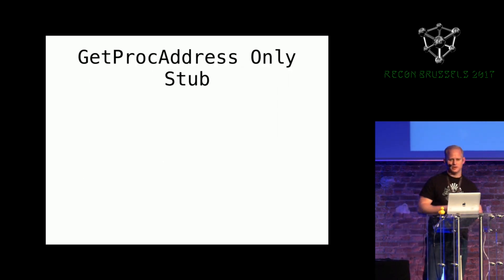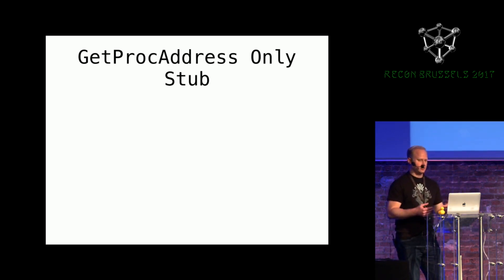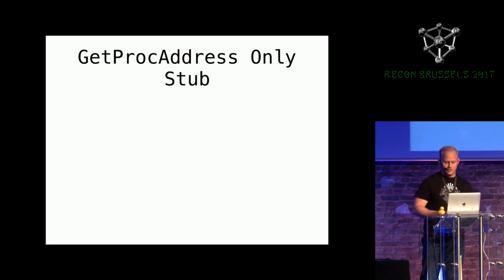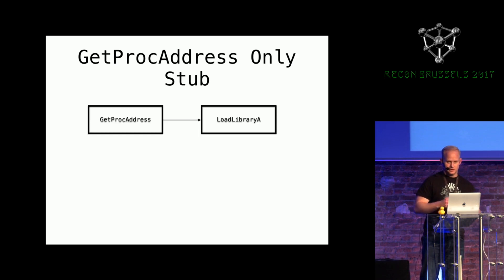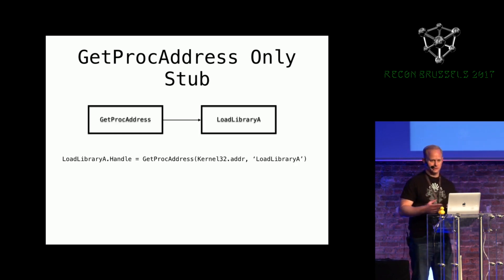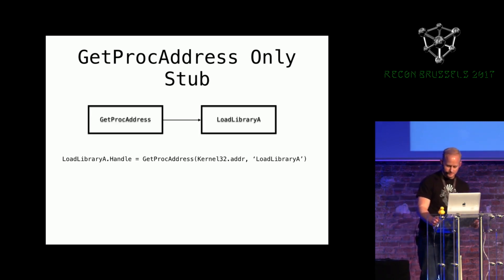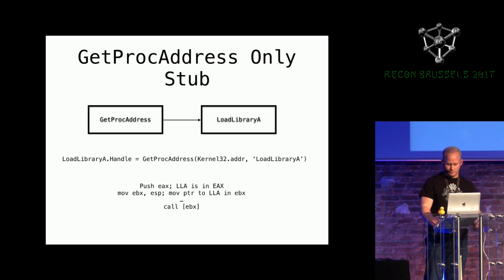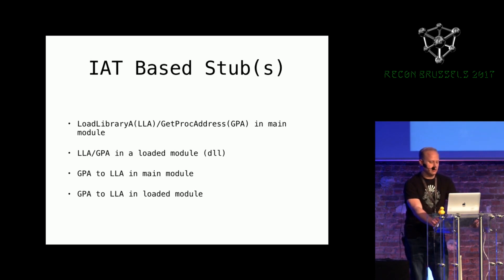We were both happy — we had two stubs. By this point we knew that if you had GetProcAddress anywhere in your module space, any DLL, you could get LoadLibraryA by getting the Kernel32 handle and calling GetProcAddress with the string 'LoadLibraryA,' and then you'd have full access to the Windows API. To bypass caller, we would put LoadLibraryA into EAX, push it on the stack, move the pointer to EBX, and call it through an indirect pointer. So now we had four stubs that we could use.